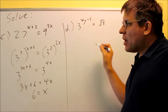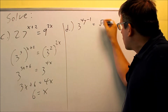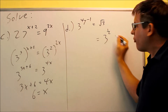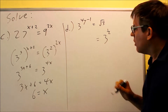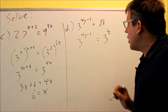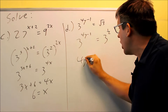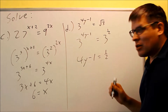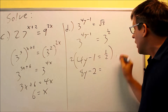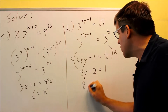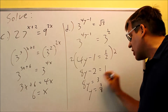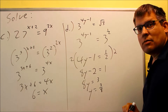For part D, one side already has a base of 3, and I want to write the other side as base 3 as well. A square root is the same as raising to the power of one half — a cube root would be one third, a fourth root would be one fourth, and so on. So the square root of 3 is 3 to the one half. Setting exponents equal: 4y minus 1 equals one half. Multiplying both sides by 2 gives 8y minus 2 equals 1, then adding 2 and dividing by 8 gives y equals three eighths. Fraction answers are possible on these problems.